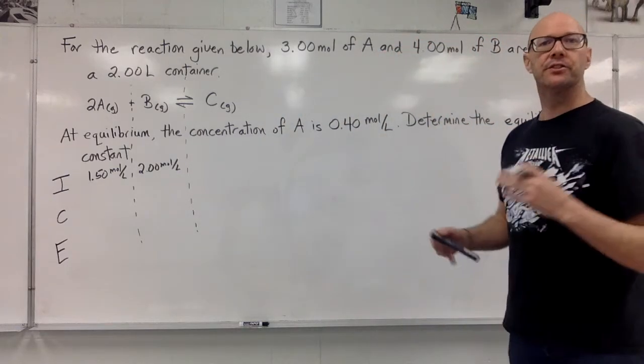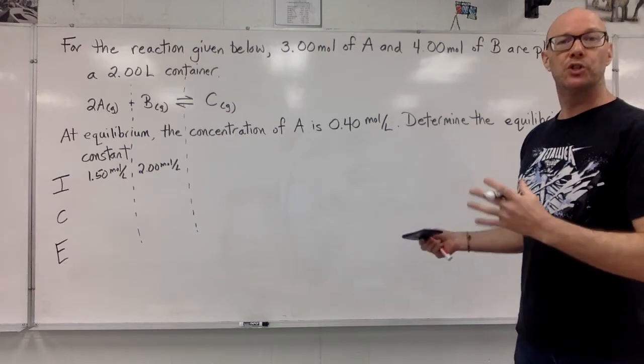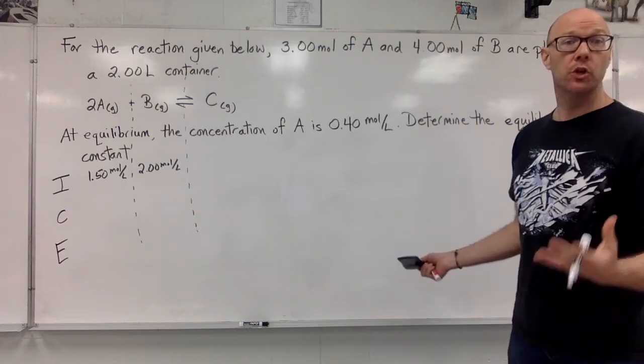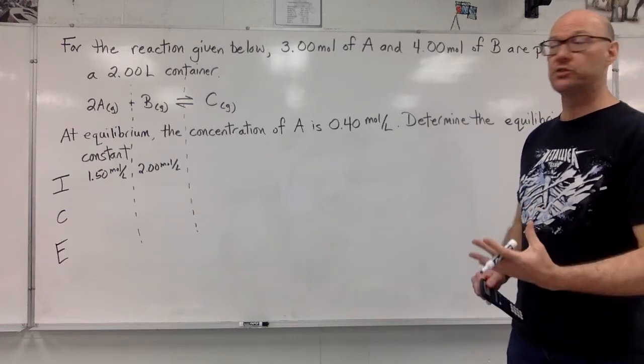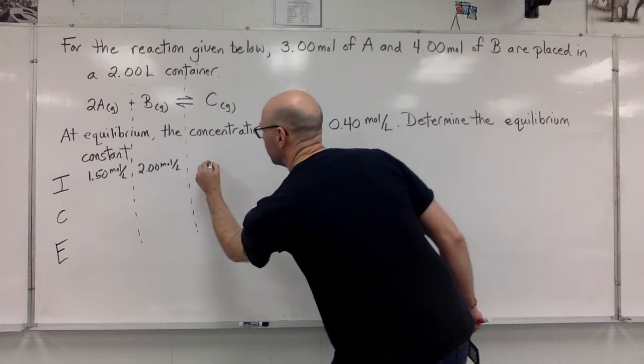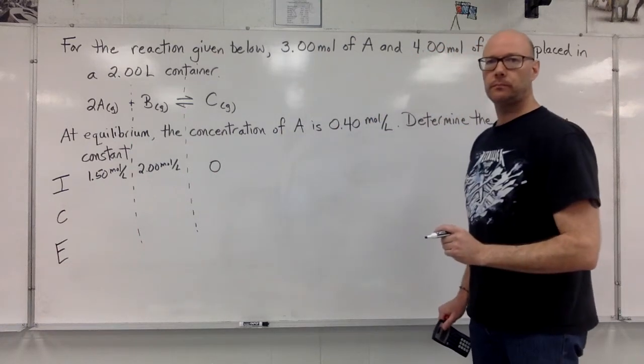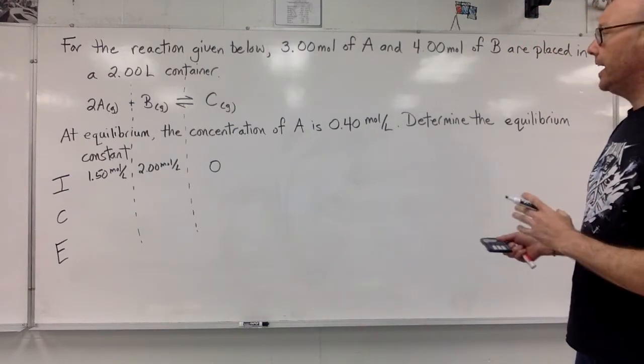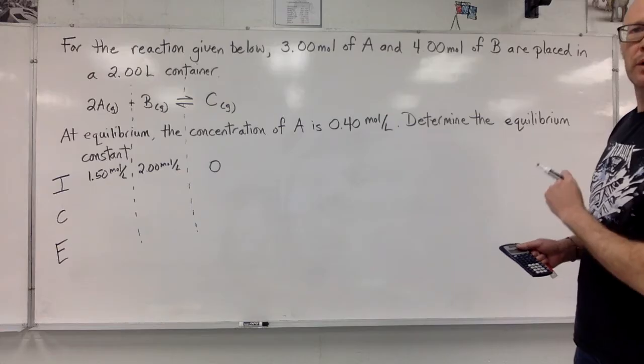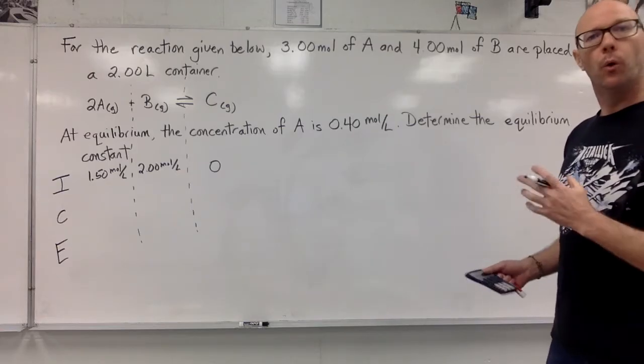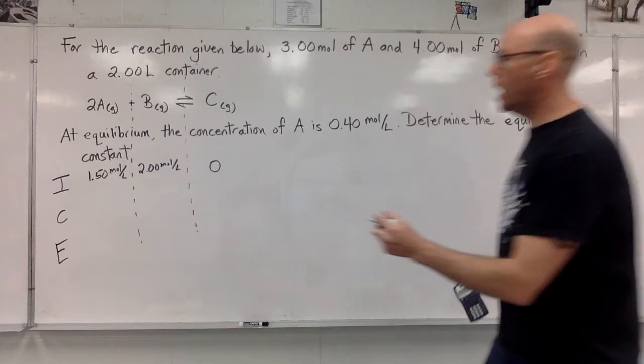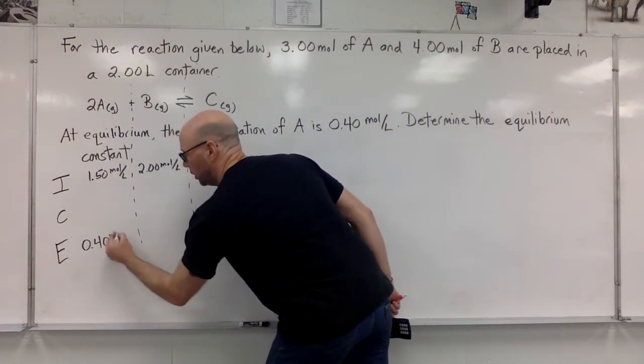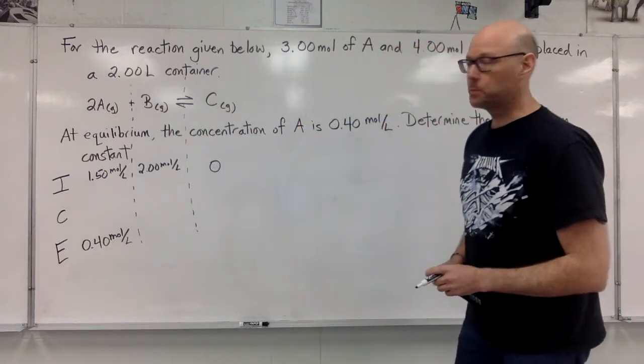This first sentence is describing the initial setup. We had the two reactants present, but before the reaction began, there was no C. So the initial concentration of chemical C here is 0. Then, at equilibrium, the concentration of A was found to be 0.40 moles per liter. Oh, that's going to go right here. 0.40 moles per liter.